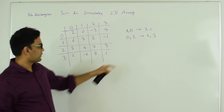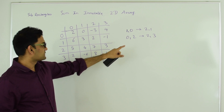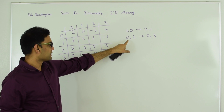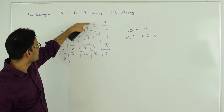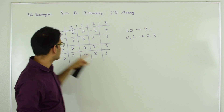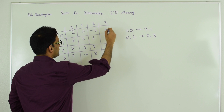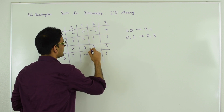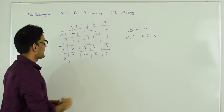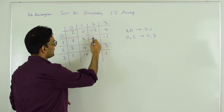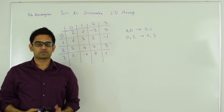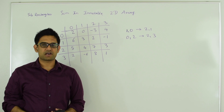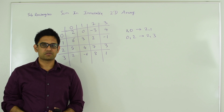Another query could be: what is the sum in the rectangle starting at 0,2 and ending at 2,3? The sum in this rectangle is 12. So how do we do it? We are going to use dynamic programming to solve this question.